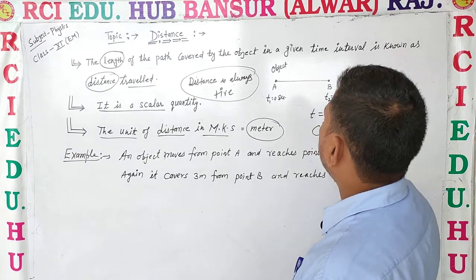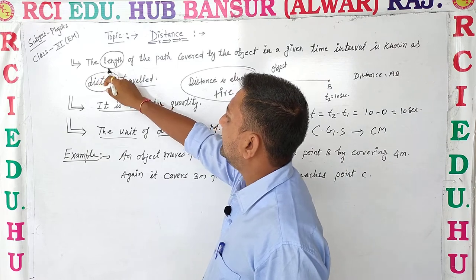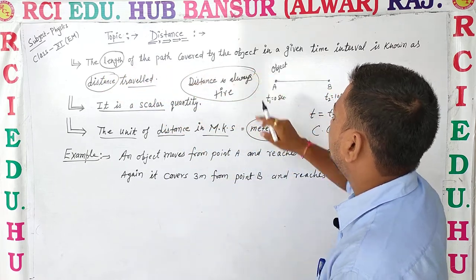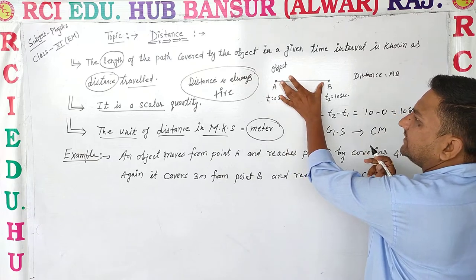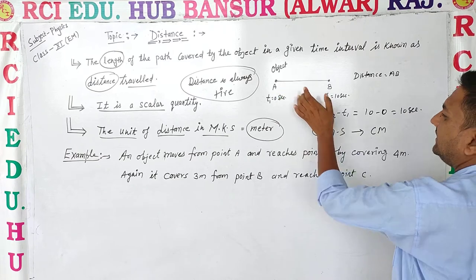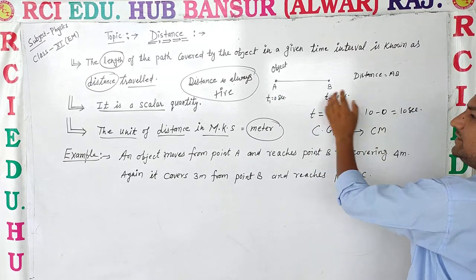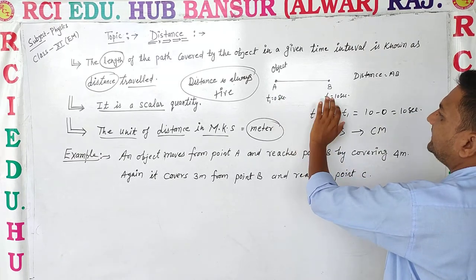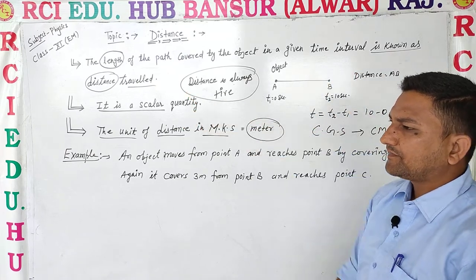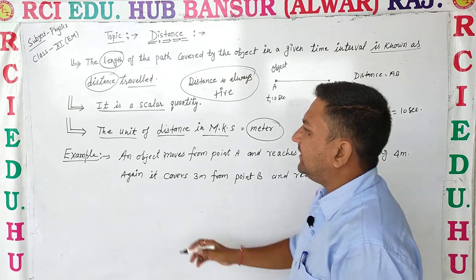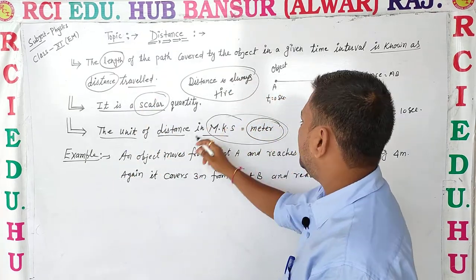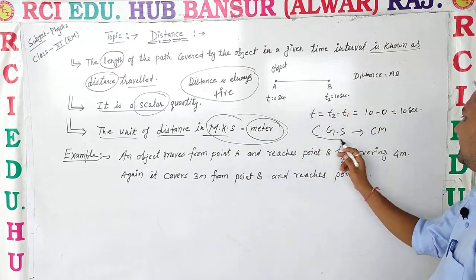Again, distance is the length of the path covered by the object in a given time interval — for example, 10 seconds — measured as T2 minus T1. This is known as distance travelled. It is a scalar quantity, and its unit in the MKS system is meter and in the CGS system is centimeter.